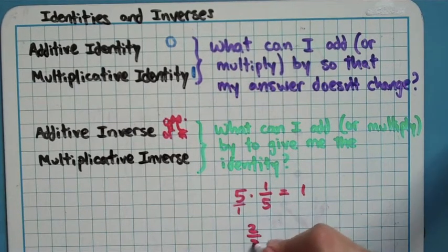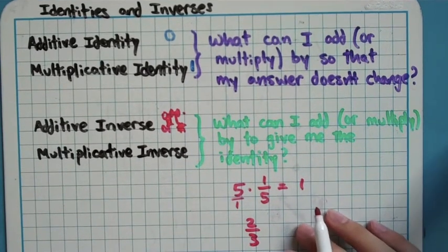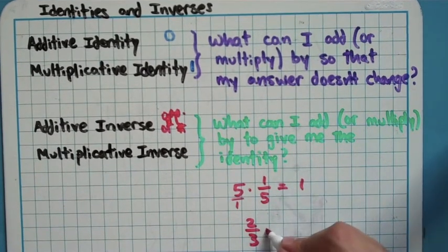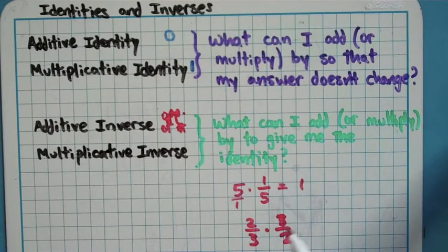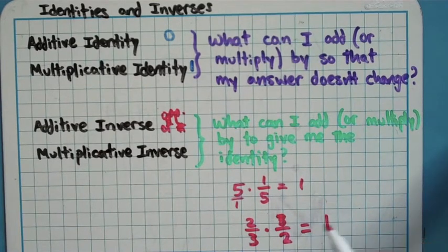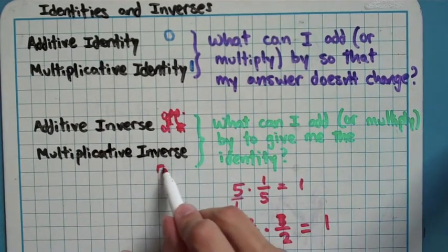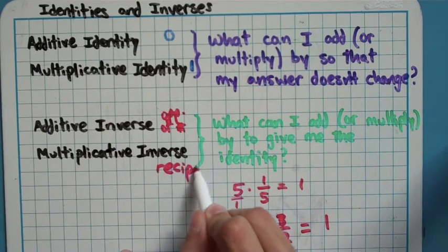If I had 2 thirds, for example, and I wanted to figure out what I had to multiply by, 2 thirds times 3 over 2, I get 6 over 6, which is 1. So, the multiplicative inverse is the reciprocal of whatever number you have.